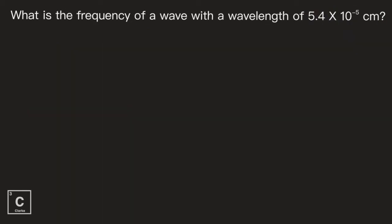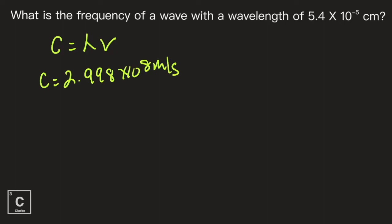Here's one where we're going to need math. What is the frequency of a wave with a wavelength of 5.4 times 10 to the negative 5 centimeters? I always like to start with my formula. The speed of light equals wavelength times frequency, where the speed of light is 2.998 times 10 to the 8 meters per second. Your teacher might give you a different number — I also see it given as 3 times 10 to the 8. I like to use those extra decimal places. I have lambda, so I'm ready to solve for frequency, but there is a problem.